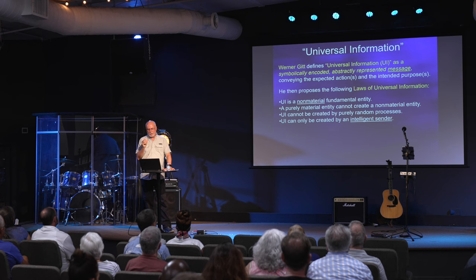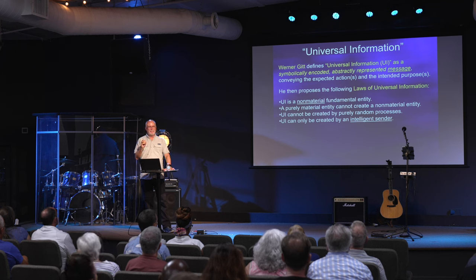Universal information is symbolically encoded and abstractly represented. The English language you're looking at right now is a code, and you've been taught this code since you were young. If I were to mention sheep, I could spell out S-H-E-E-P — that's symbolically encoded and abstractly represented. If I drew you a picture of a sheep it wouldn't be so abstract — you could look and say 'that's a sheep.' But writing the word 'sheep' is symbolically encoded and abstractly represented. There's nothing in S-H-E-E-P that would make your mind think of a sheep other than the fact that you understand the code.